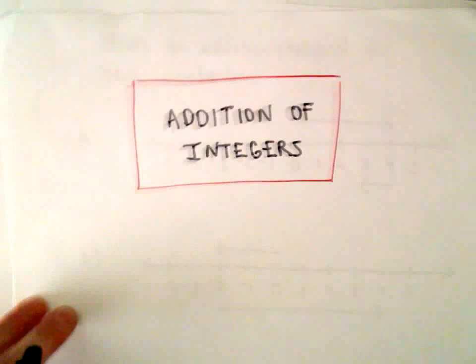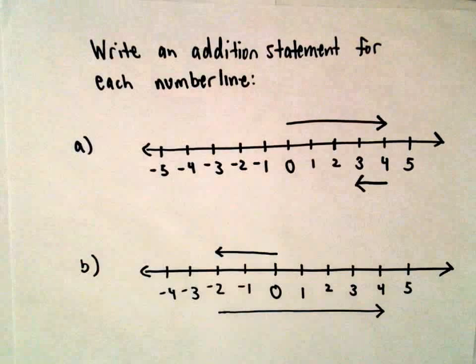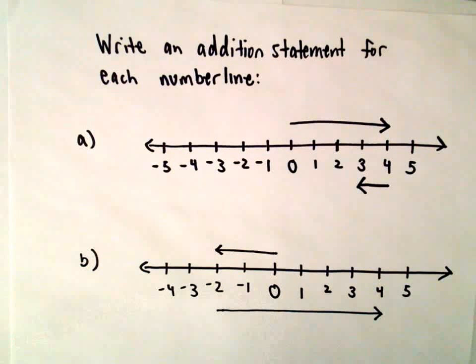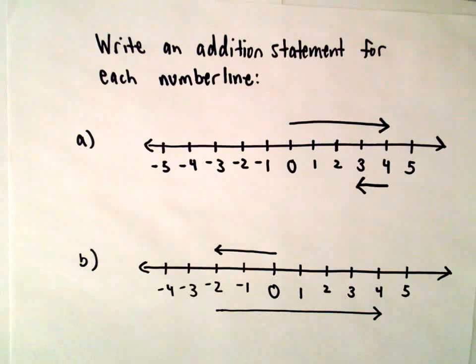All right, here we're going to look at an example related to addition of integers. What we're going to do is write an addition statement for each of these number lines. The number lines are just a visual way of thinking about adding positive numbers and negative numbers.